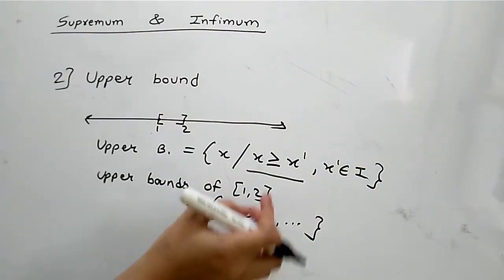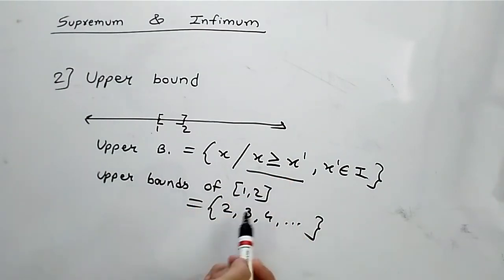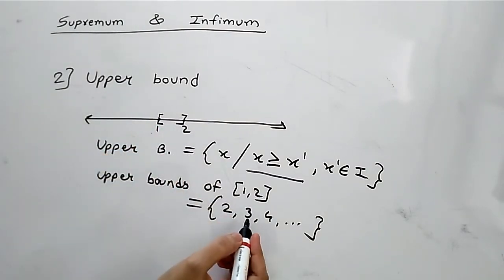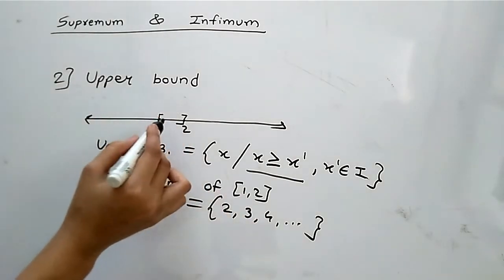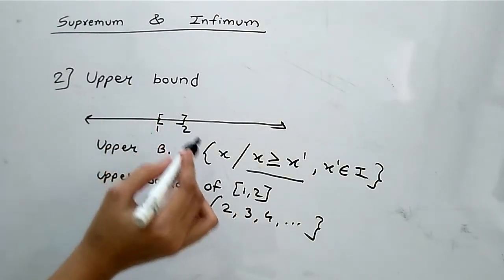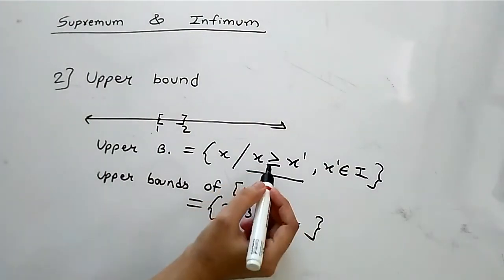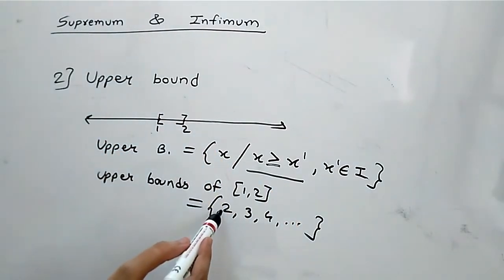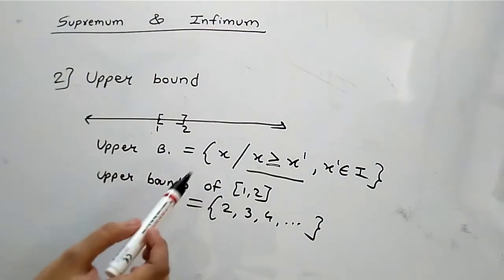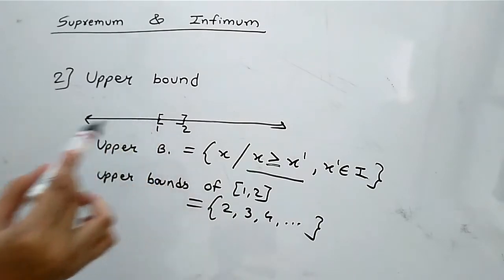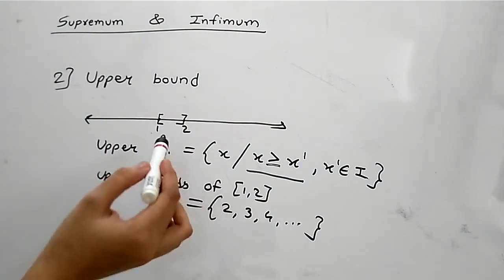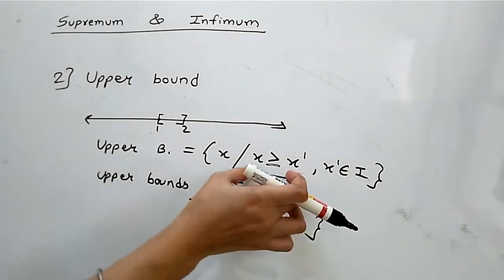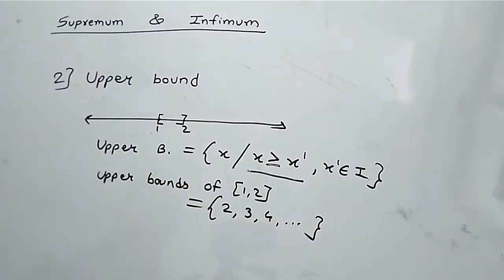We can verify that these elements satisfy the upper bound condition. For example, 3 is greater than or equal to all elements in [1, 2], and 2 is also greater than or equal to all elements in [1, 2]. Therefore, 2, 3, 4, and so on are the upper bounds of the closed interval [1, 2].